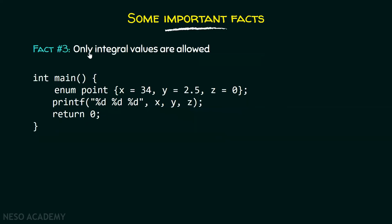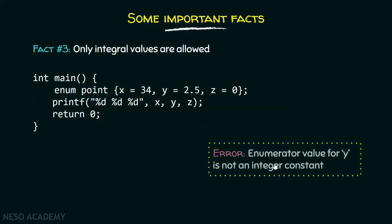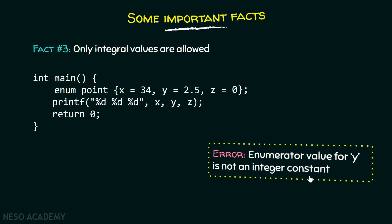Fact number three: only integral values are allowed. Here we are giving a float value to the name y, which is not allowed. The output is an error message: enumerator value for y is not an integer constant, which confirms that only integral values are permitted.